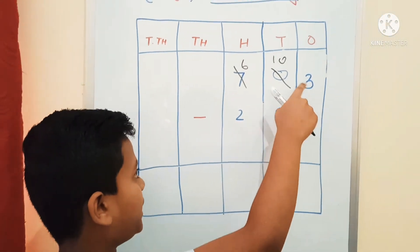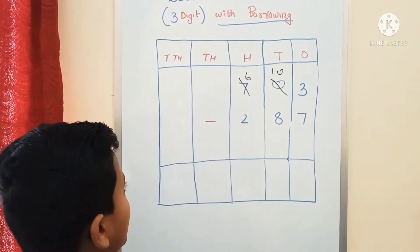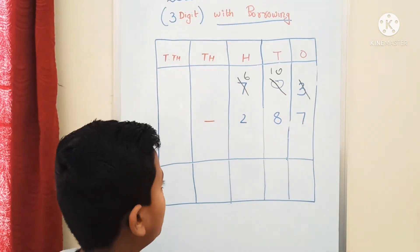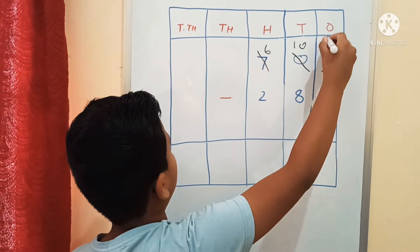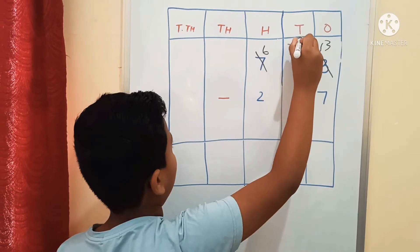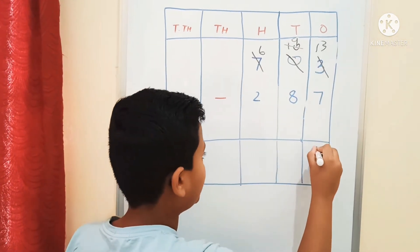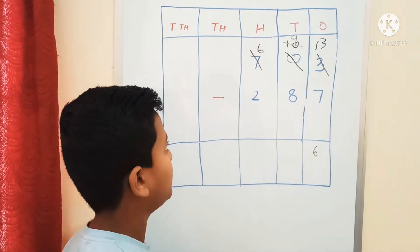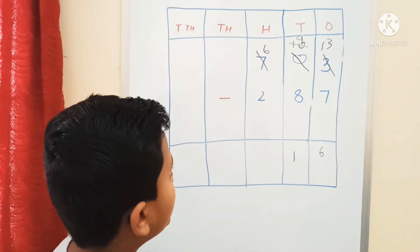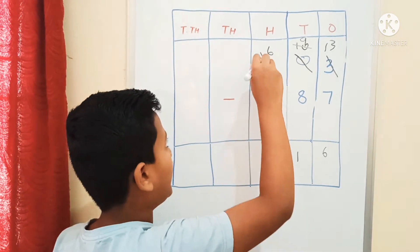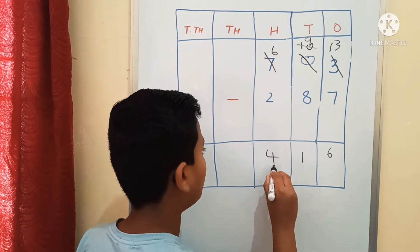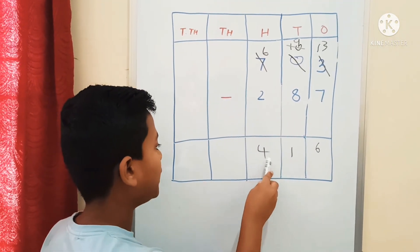We cannot subtract 7 from 3, so we go to the 10th place. Now we have 10 there, so we will borrow 1 tenth. This 3 is now 13, and after borrowing, this 10 is 9. So, 13 minus 7 is equal to 6. We go to the 10th place: 9 minus 8 is equal to 1. We go to the 100th place: we have 6, and 6 minus 2 is equal to 4. So, our answer is 416.